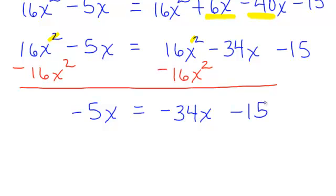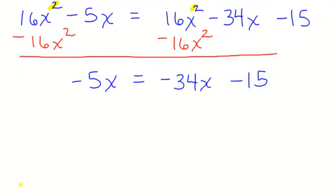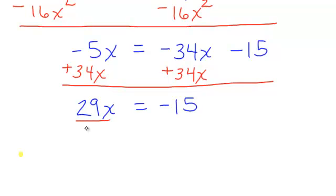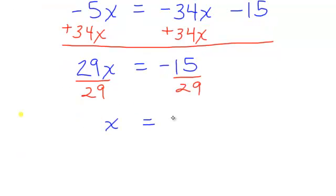Now we're down to a simple linear equation. Let's get our variables on the left — I'm going to add 34x to both sides. On the left, negative 5x plus 34x gives 29x. On the right, the 34x and negative 34x cancel, leaving negative 15. I'll divide both sides by 29. The answer is negative 15 over 29.